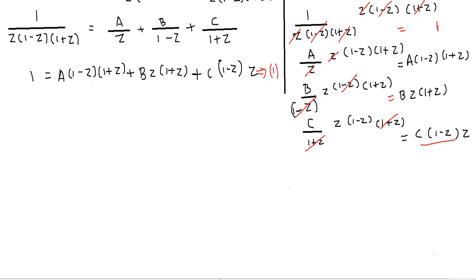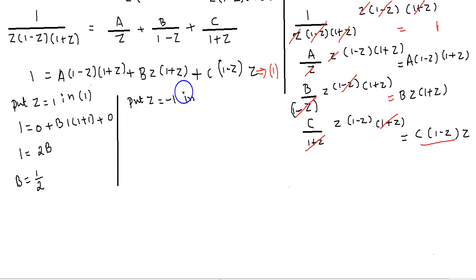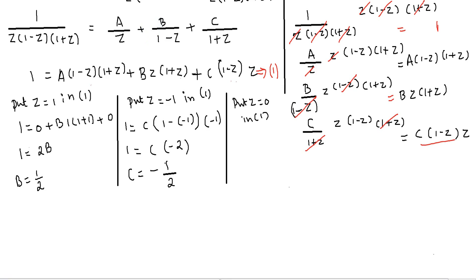We need to find the values of A, B, and C. Putting z equal to 1 in equation 1, we get B equal to 1/2. Similarly, putting z equal to minus 1 in equation 1, we get C equal to minus 1/2. Putting z equal to 0 in equation 1, we get A equal to 1.